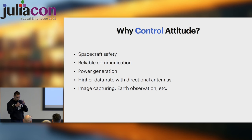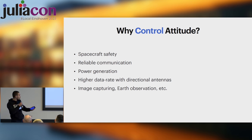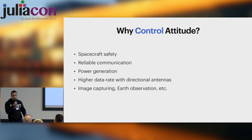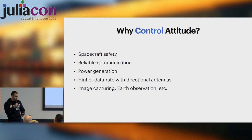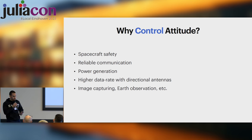We also need attitude control to maximize power generation by pointing our solar panels to the sun — especially in CubeSat missions where power budgets are very tight. We may also need to use directional antennas to achieve higher transfer rates, pointing them to our ground station. We may need to capture images, and as I mentioned, we need to point to a very specific point to achieve the optical link we require.